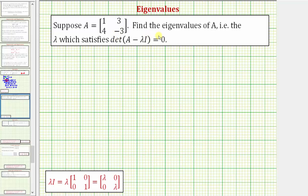We're given matrix A, and we're asked to find the eigenvalues of A, which are the values of lambda that satisfy the equation: the determinant of A minus lambda I equals zero.